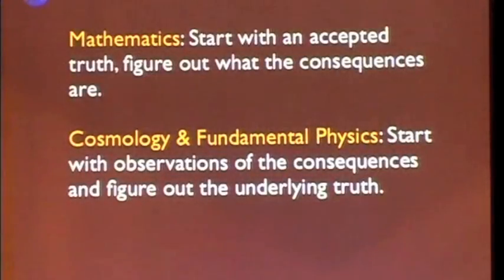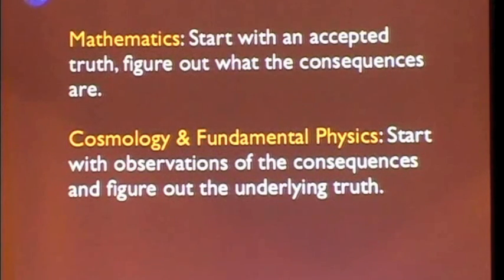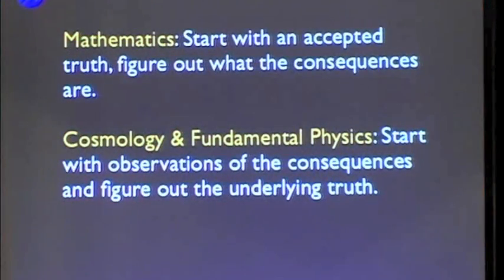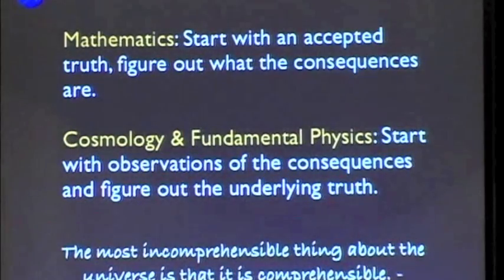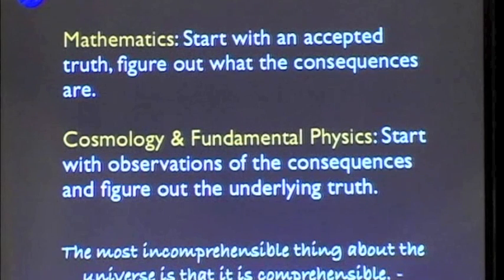And that being said, I'd like to just take a brief diversion here before getting into the cosmology part of this talk. In mathematics, we really do start with an accepted truth and then figure out what the consequences are, the non-obvious consequences of a statement or something we accept. In cosmology, fundamental physics, and really all of science, we do the opposite. We start with the observation of the consequences and figure out the underlying truth. And of course, this requires us to have a faith that there is an underlying truth out there, that the universe intrinsically is comprehensible. And when I was growing up as a teenager, on the wall of my room, I had printed out this quote, which still really applies. Albert Einstein once said that the most incomprehensible thing about the universe is that it is, in fact, comprehensible.